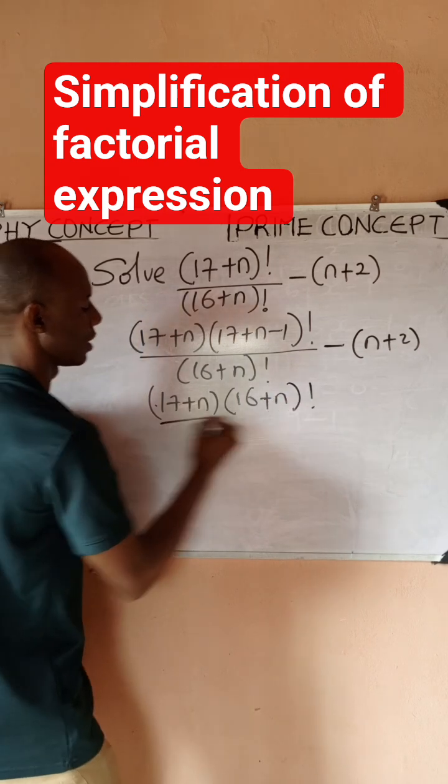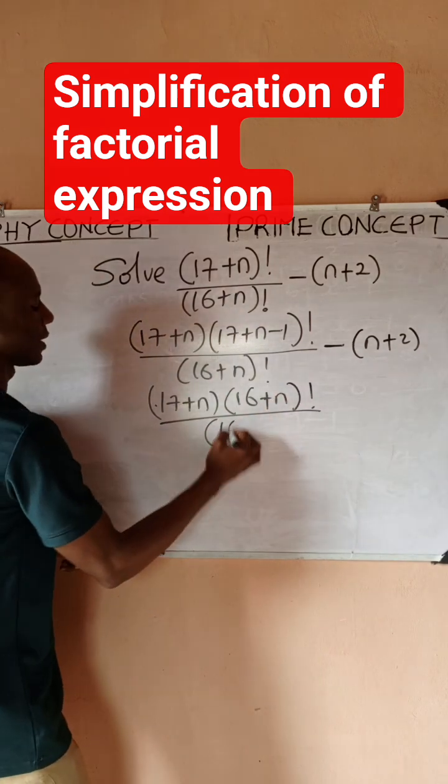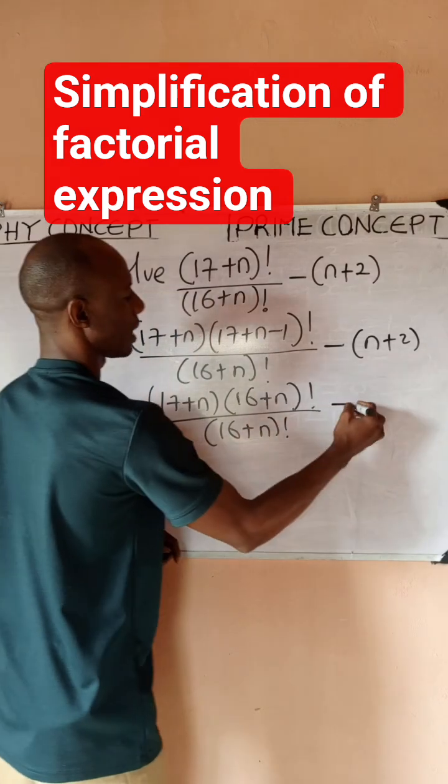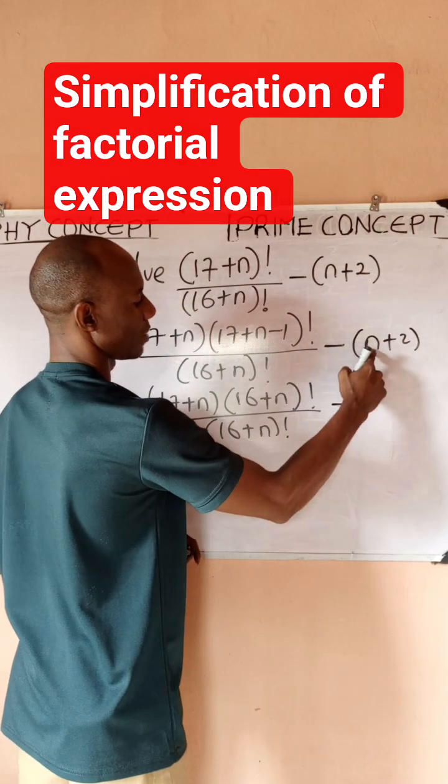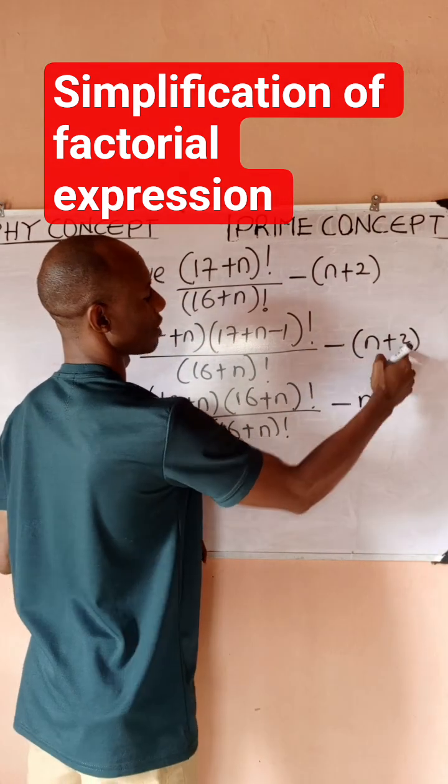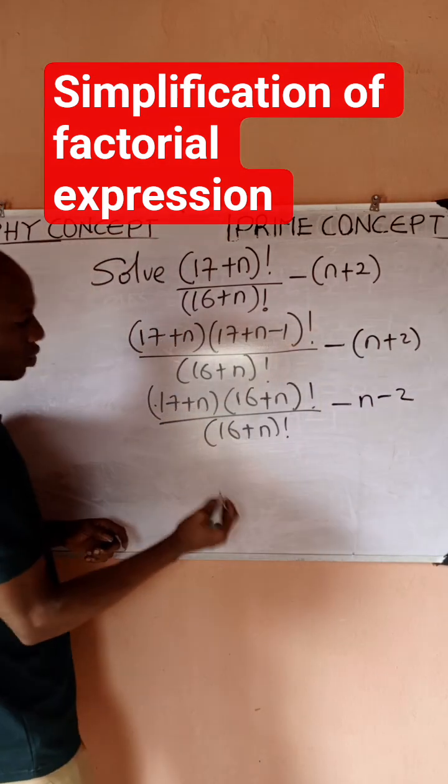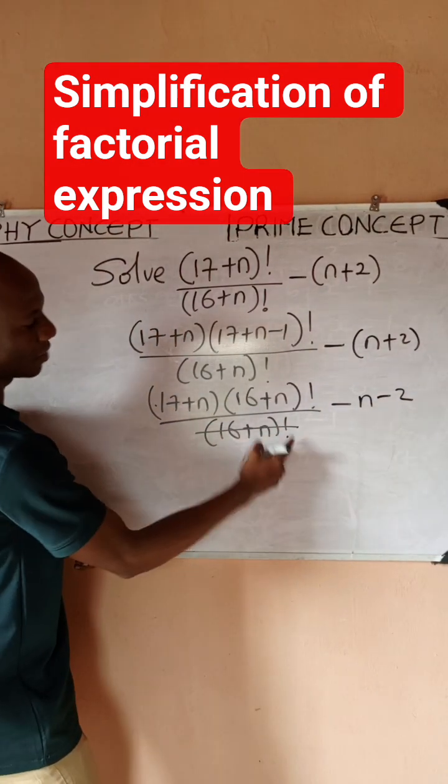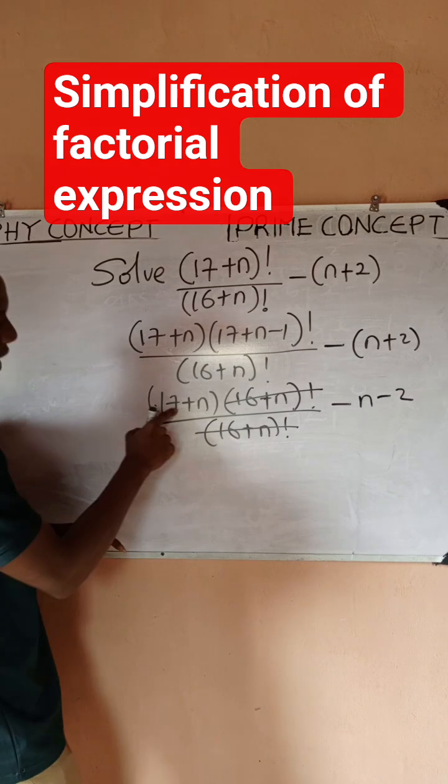Then minus, let's expand this: minus times this is minus n, minus times this is minus 2. So you'll notice that this (16+n)! will cancel this, and I'll be left with (17+n), then minus n minus 2.